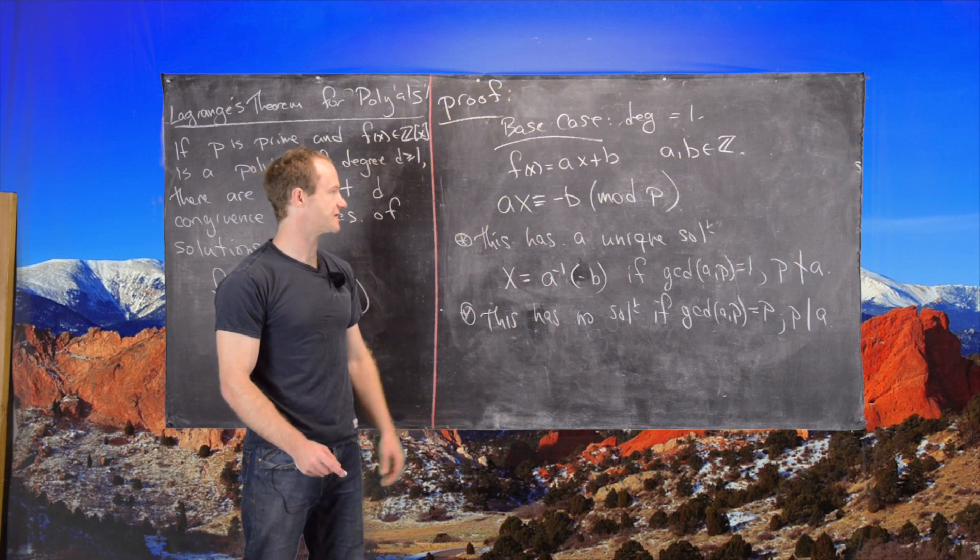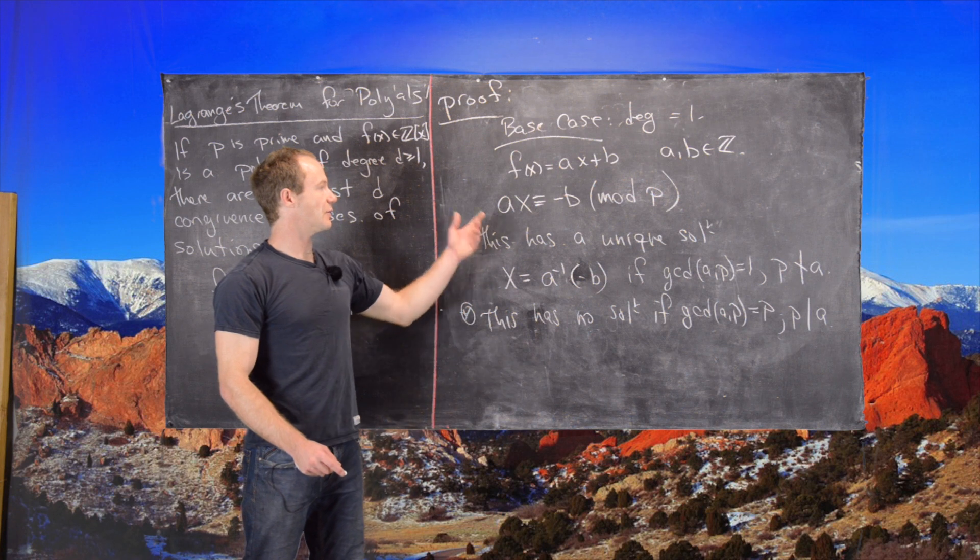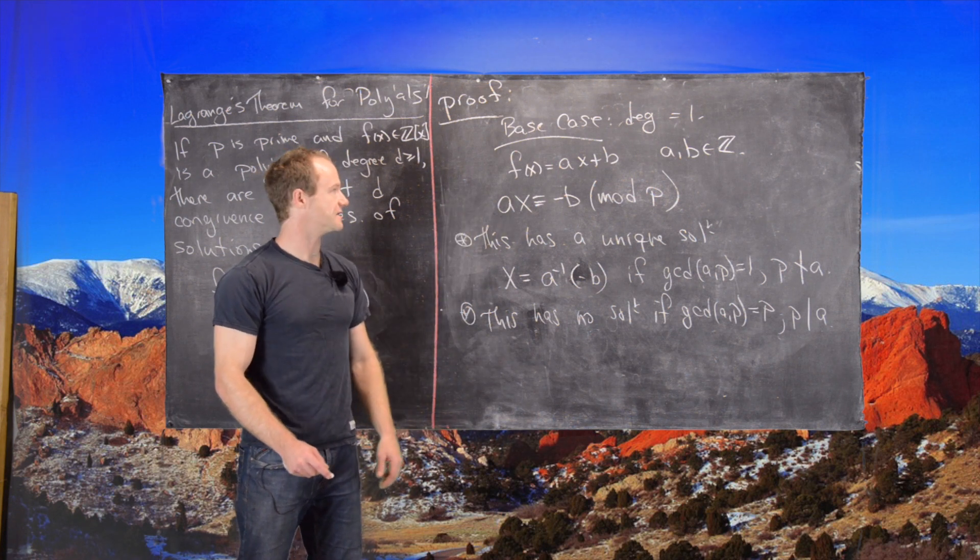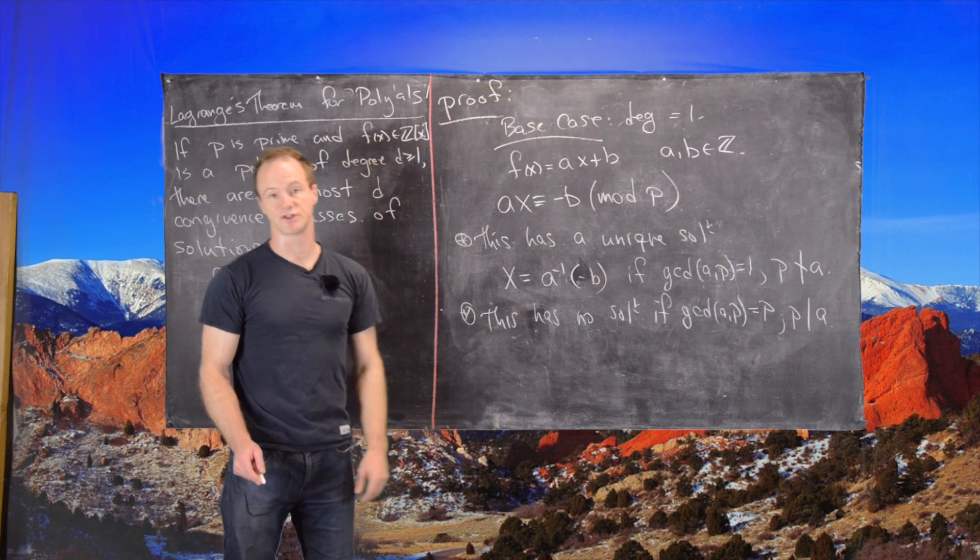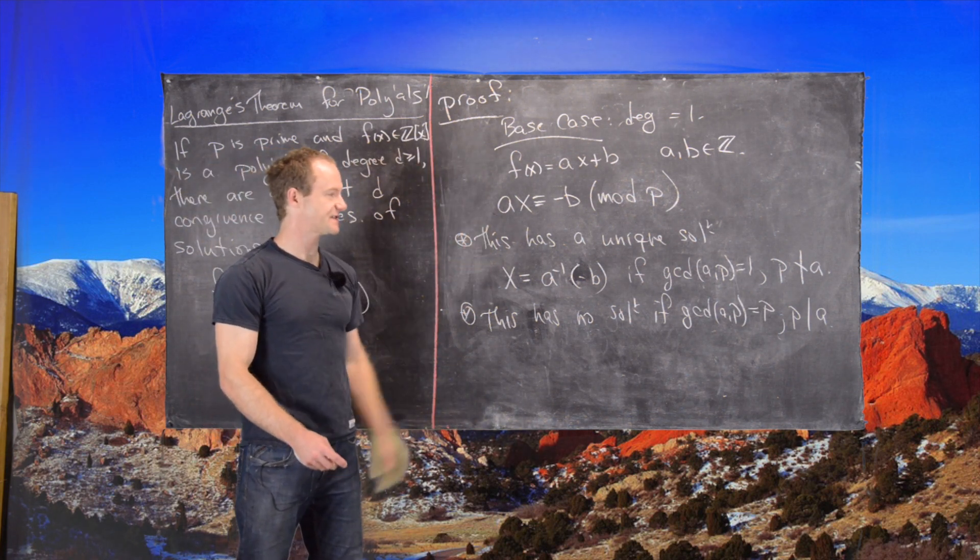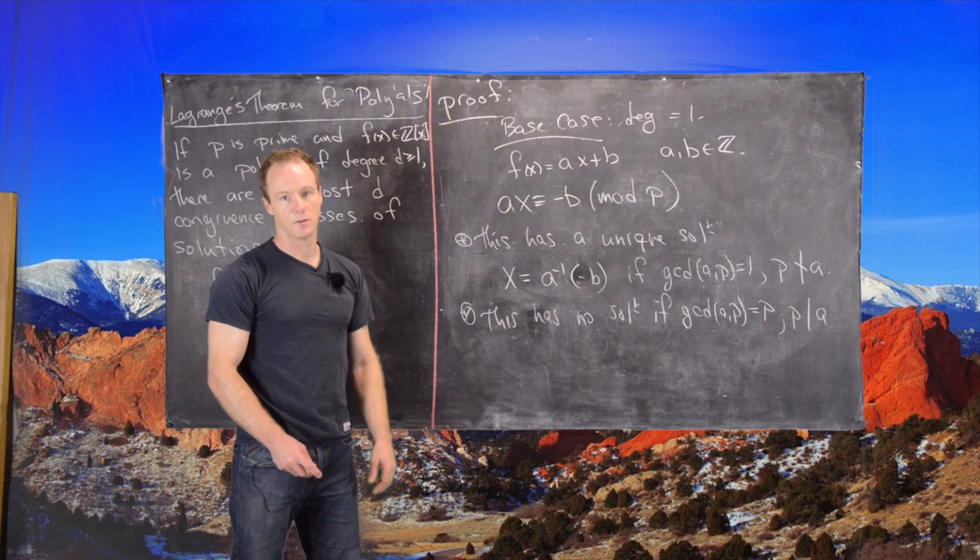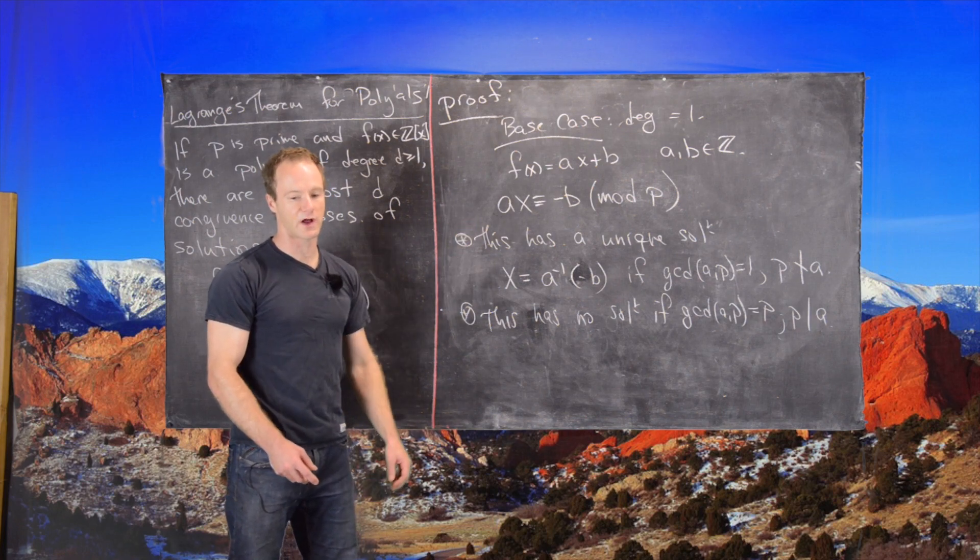If B was also equal to 0, then we would have ended up with 0 polynomial in the first place, which is not what we're interested in. So this is the base case for the induction. I'll clean up the board and then we'll move on with the proof.